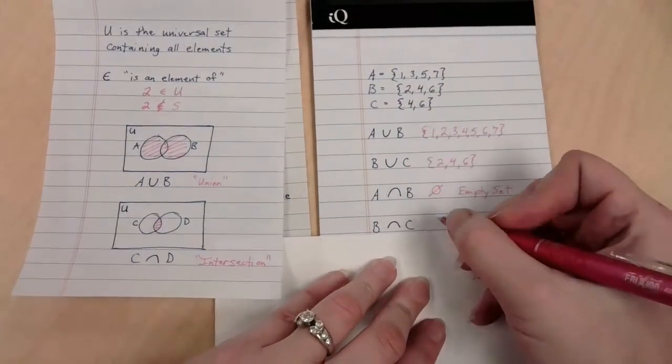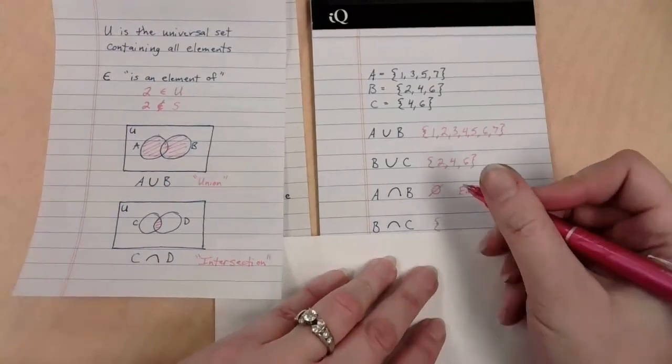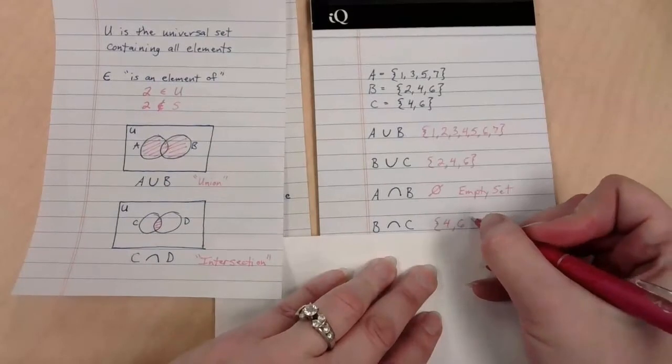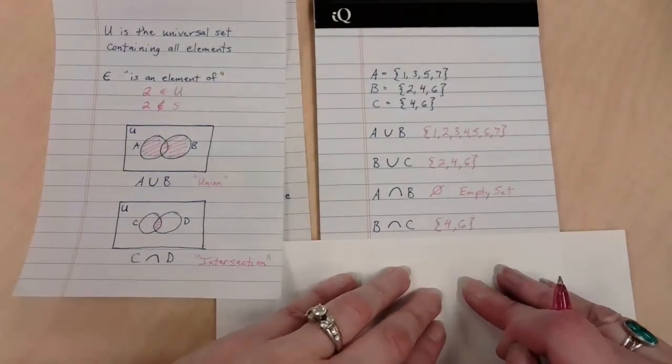What if I try to do B intersect C? Well, this is going to work a little bit better because I'm saying, so what is in both B and C at the same time? They both have a four and they both have a six. And so that is the intersection of B and C because those numbers appear in both sets.